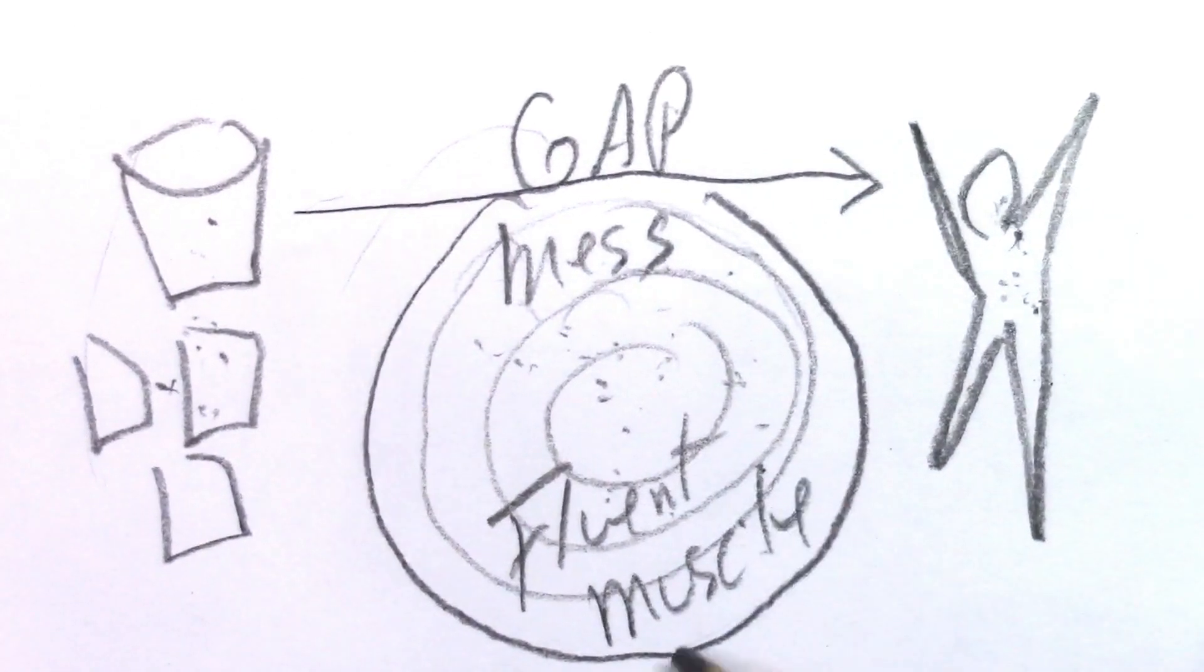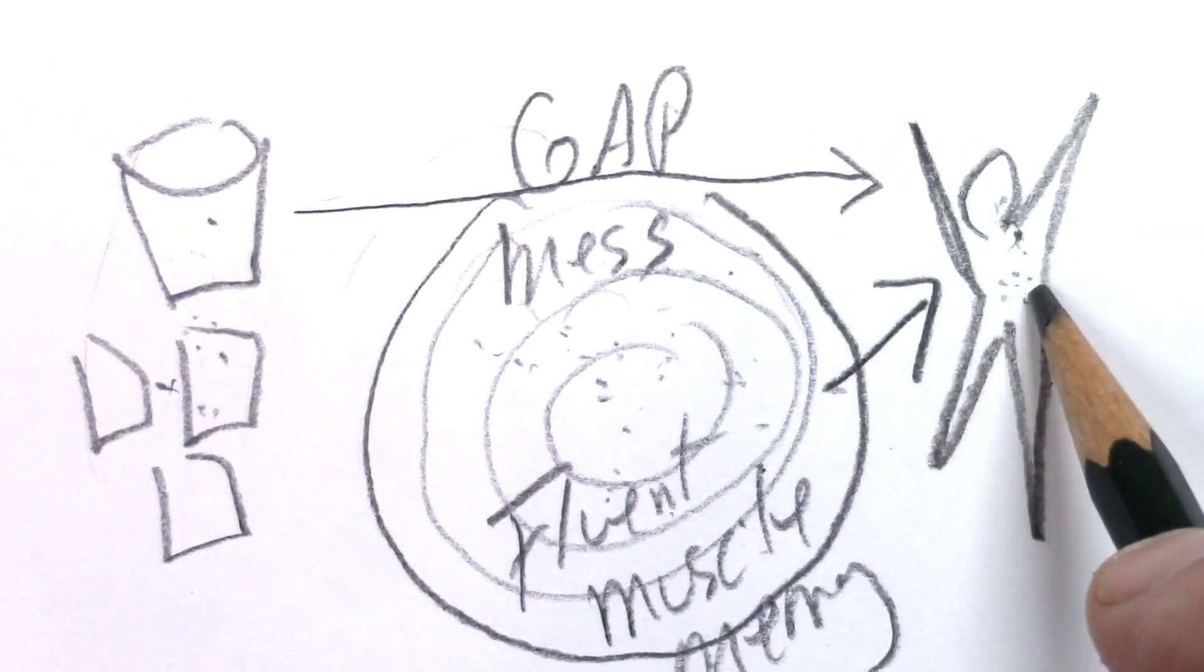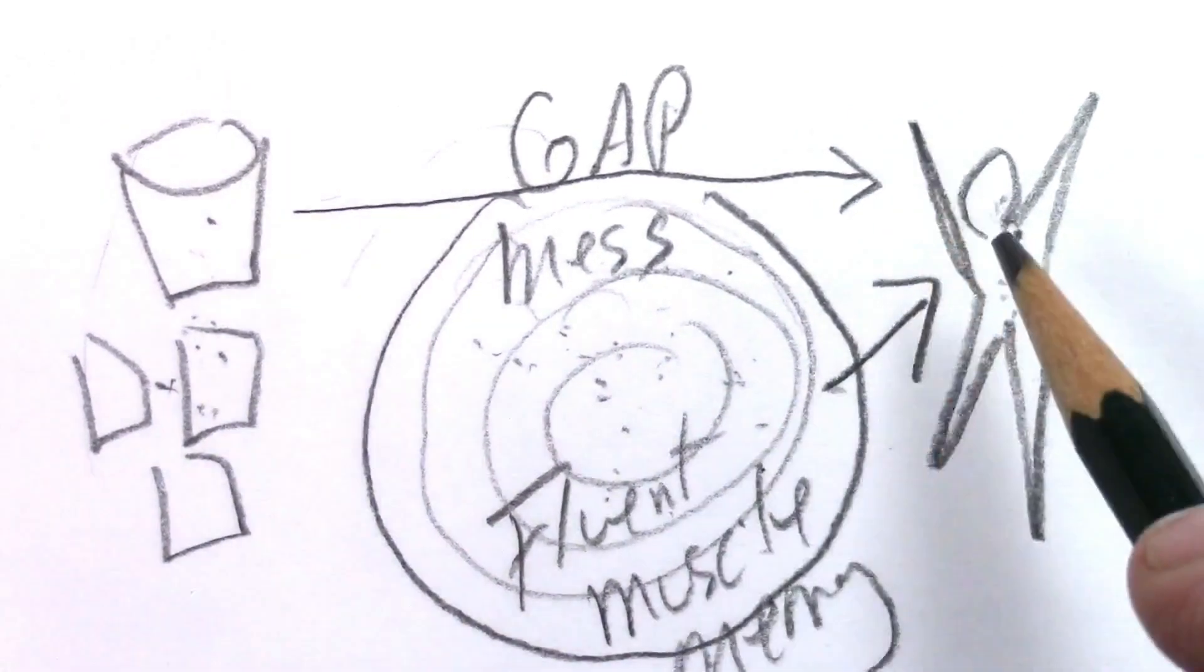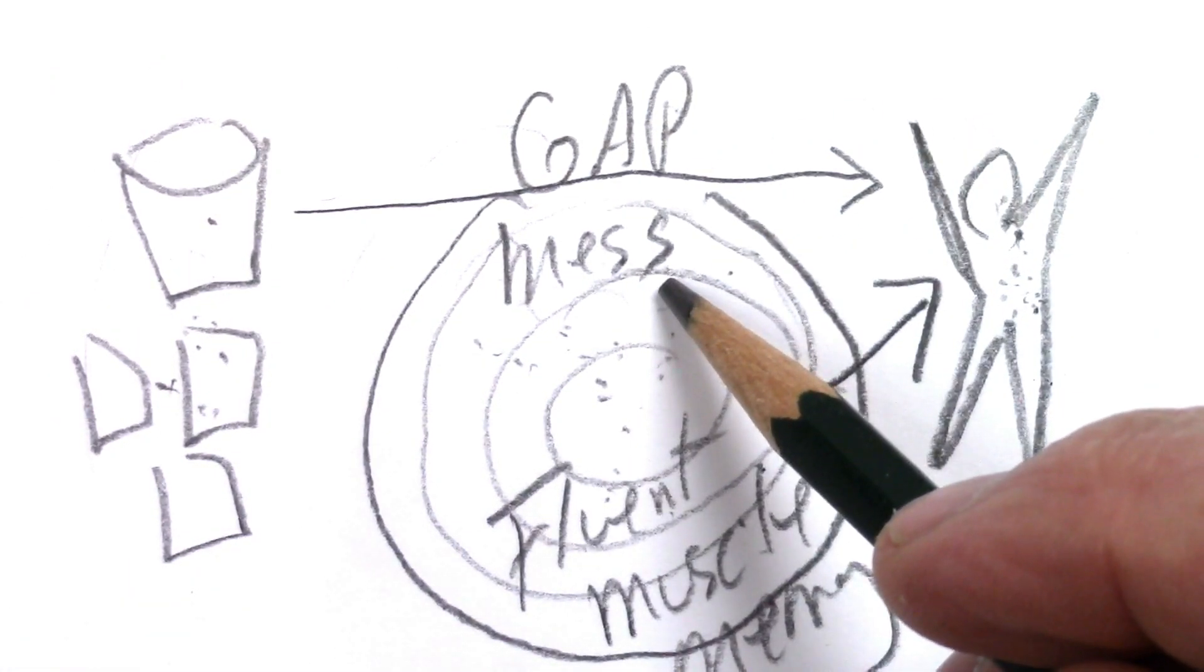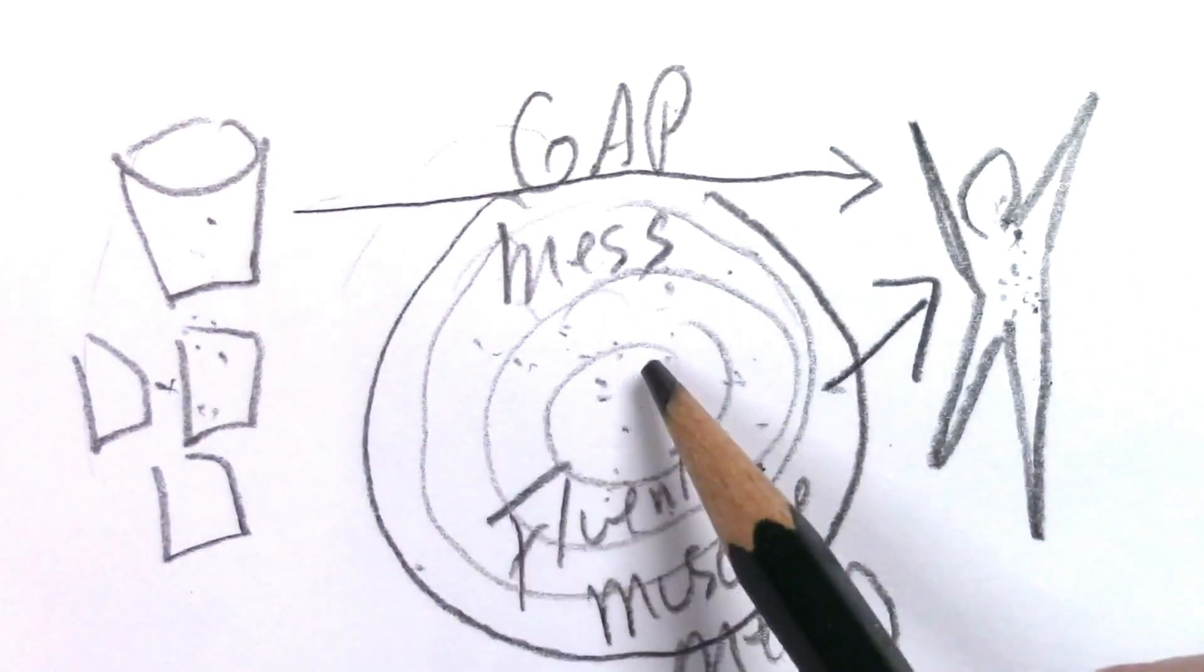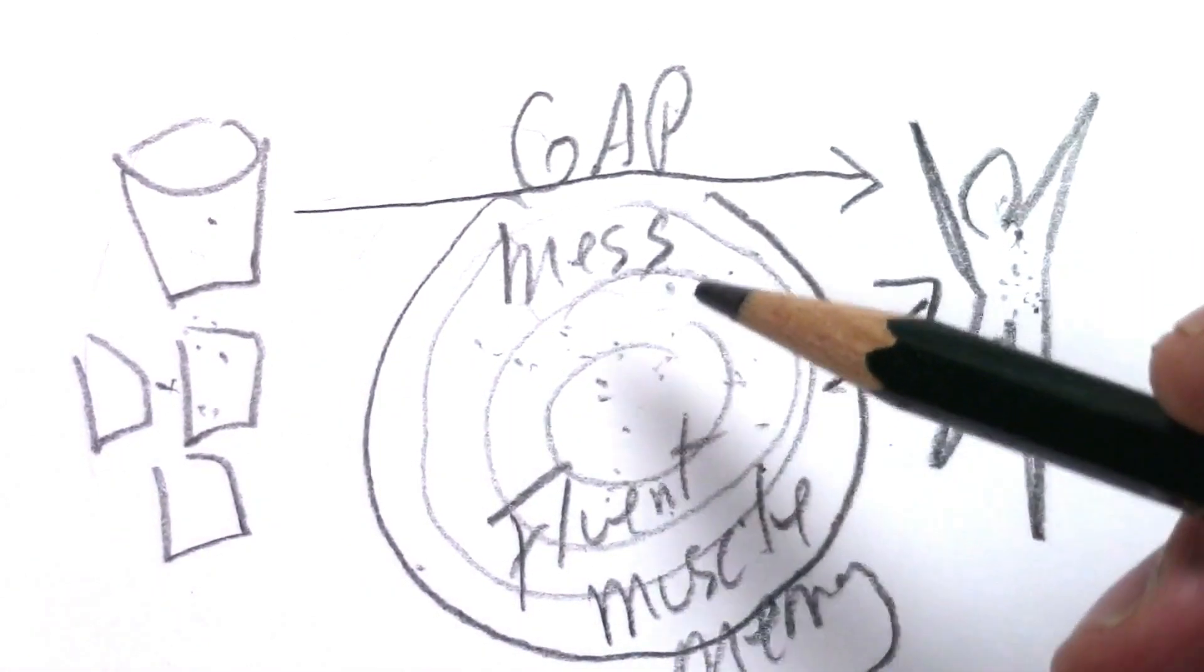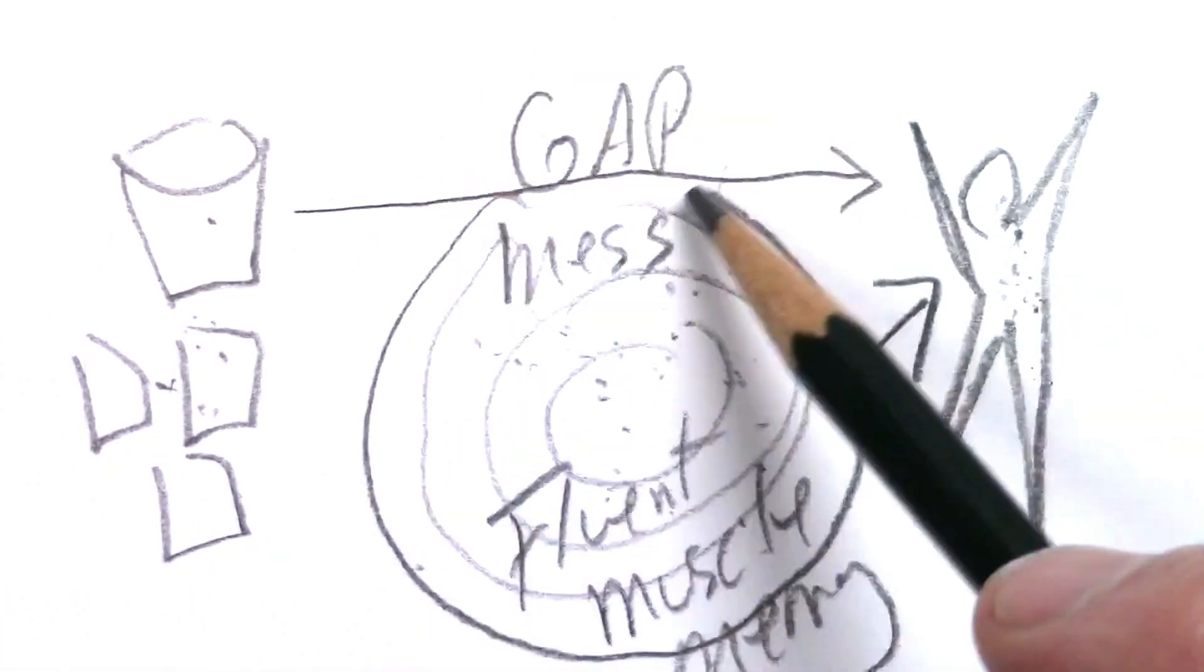What we need to spend our time doing is becoming fluent with muscle memory so that we can do this. But we can't do this without this. Accepting that you're going to make a mess, accepting that you're going to be confused, accepting that you're going to make bad stuff, that's part of your gap.